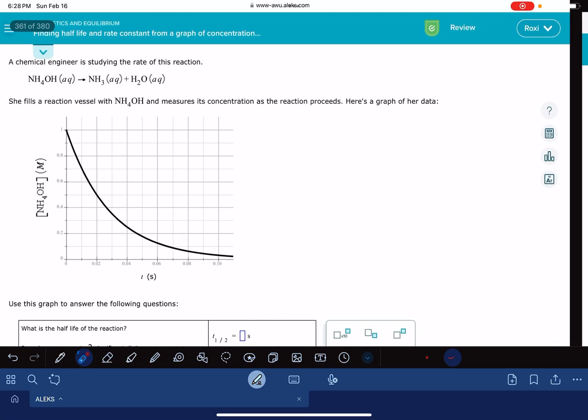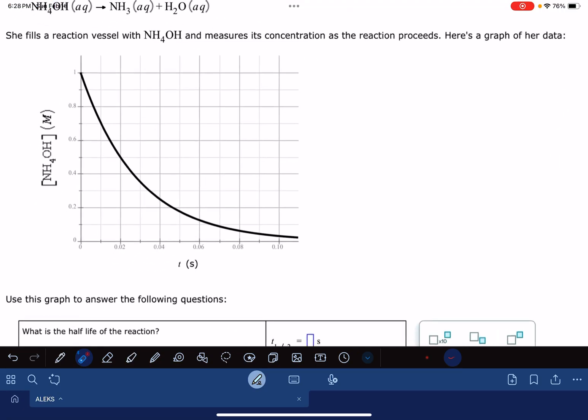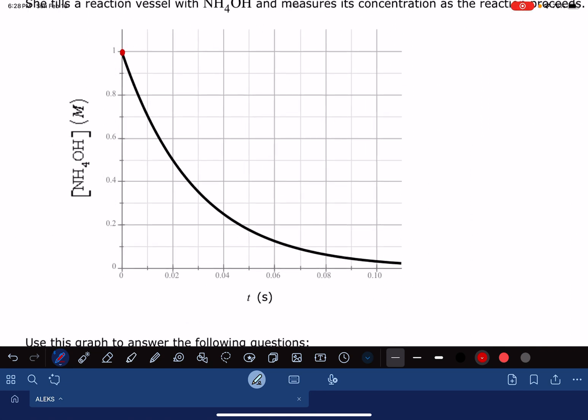The first question is asking us what is the half-life of the reaction. To get the half-life, what we're going to do is read the starting concentration of our substance on our graph. For mine, that starting concentration is 1 molar. That's my initial concentration. The half-life is the amount of time that it takes for this initial concentration to be divided in half.